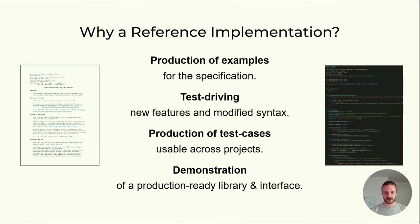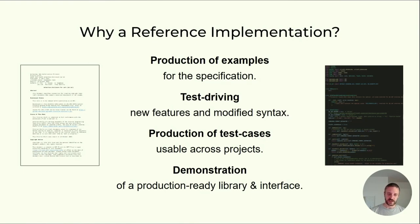We also use this for test driving. If we have any new features or want to modify the syntax, we can just do that in our reference implementation and see whether it works, whether it makes sense, and get a feeling for the effort needed by implementers. We also produce test cases — some are defined in the reference implementation repository right now. We want to make those usable across projects so that everybody can test on the same list of test cases. And with this implementation, we wanted to demonstrate what a production-ready library interface could look like — how we think an SD-JWT library should work, what the input and output data is.